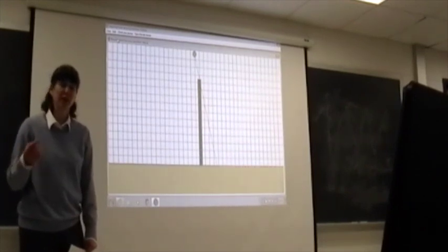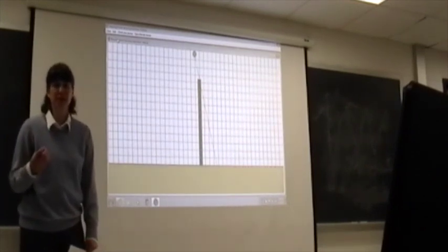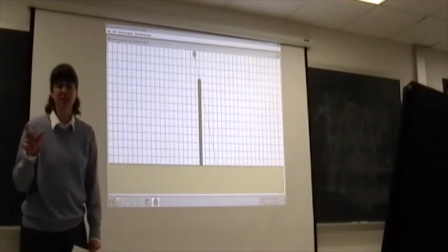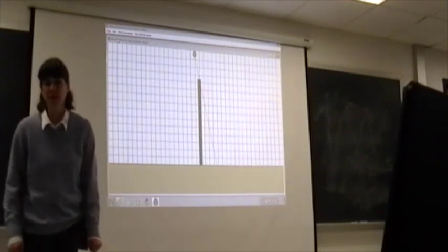And once you have that angle, you can then use the ratio of that angle to 360 degrees is the same as the distance between those two points to the actual circumference of the Earth.